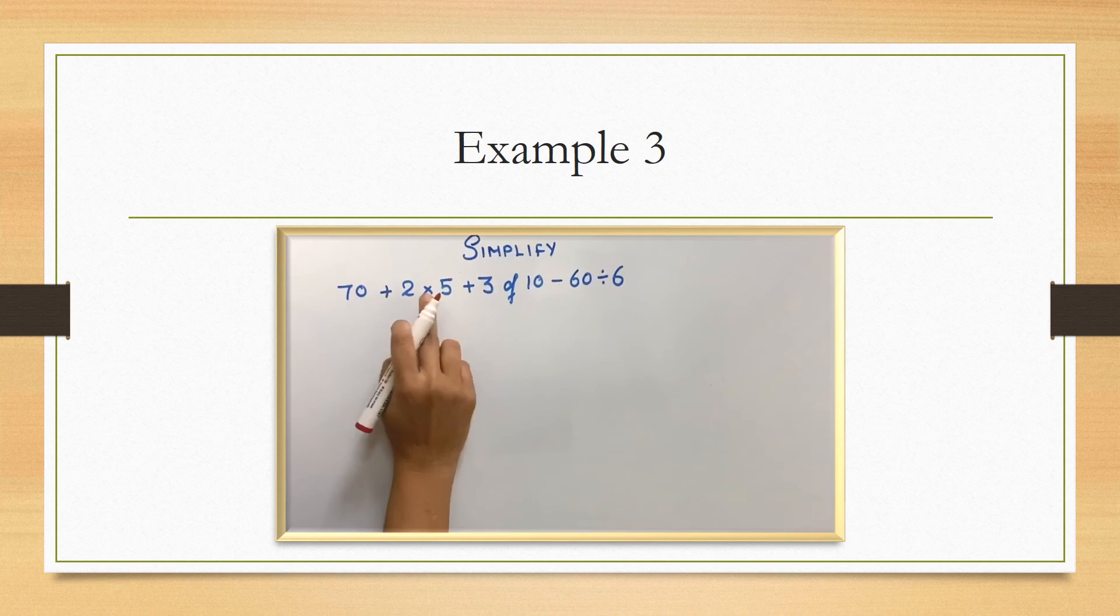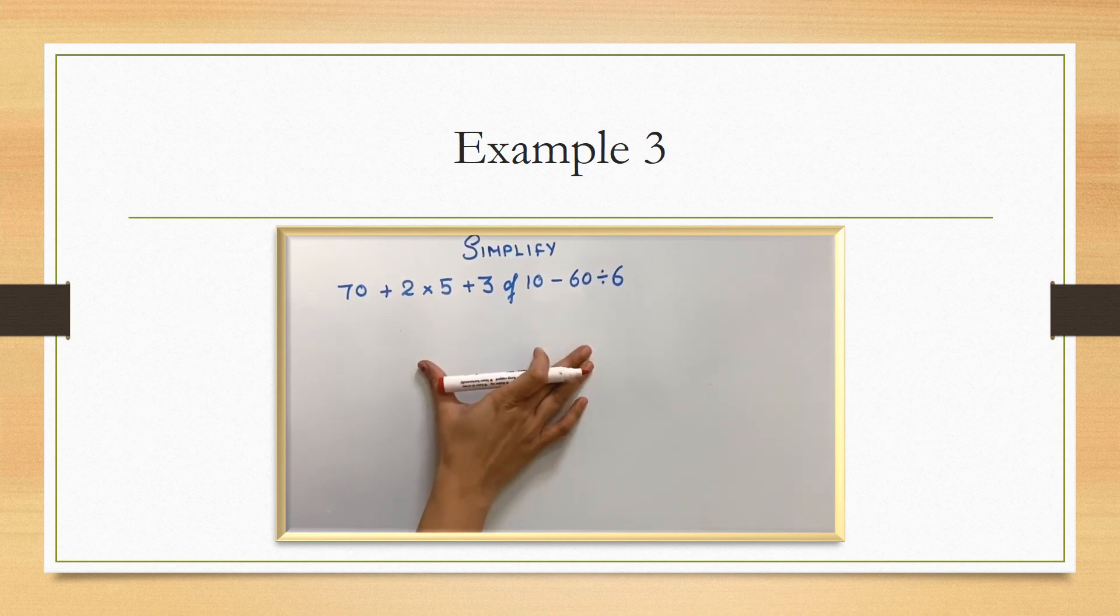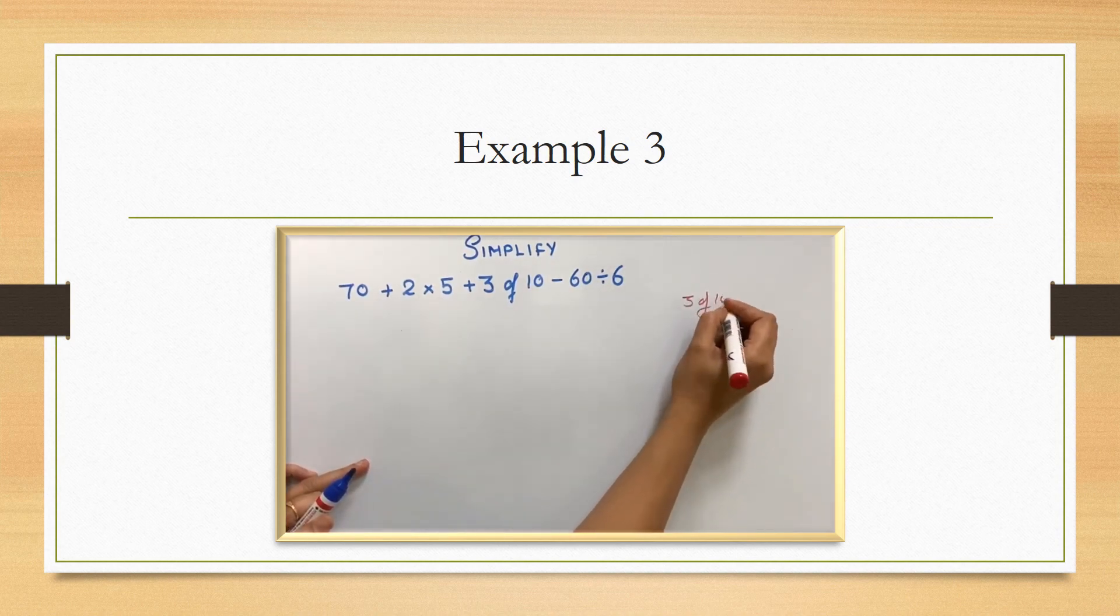Here, addition, multiplication, addition, subtraction, division. We have to do first off. There is no bracket. So next is off. 3 of 10. It means that 3 into 10. So 3 into 10 is 30.